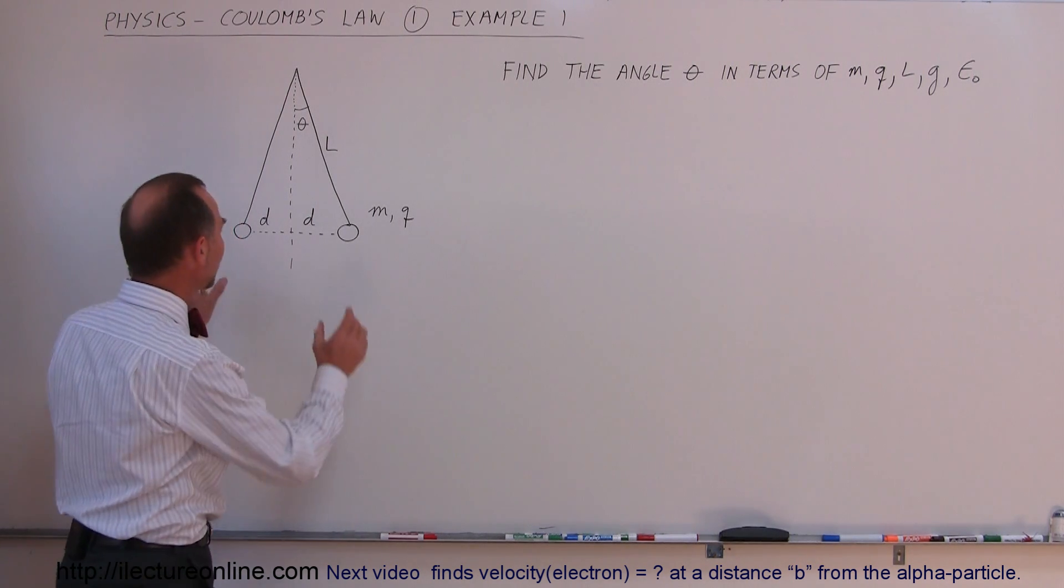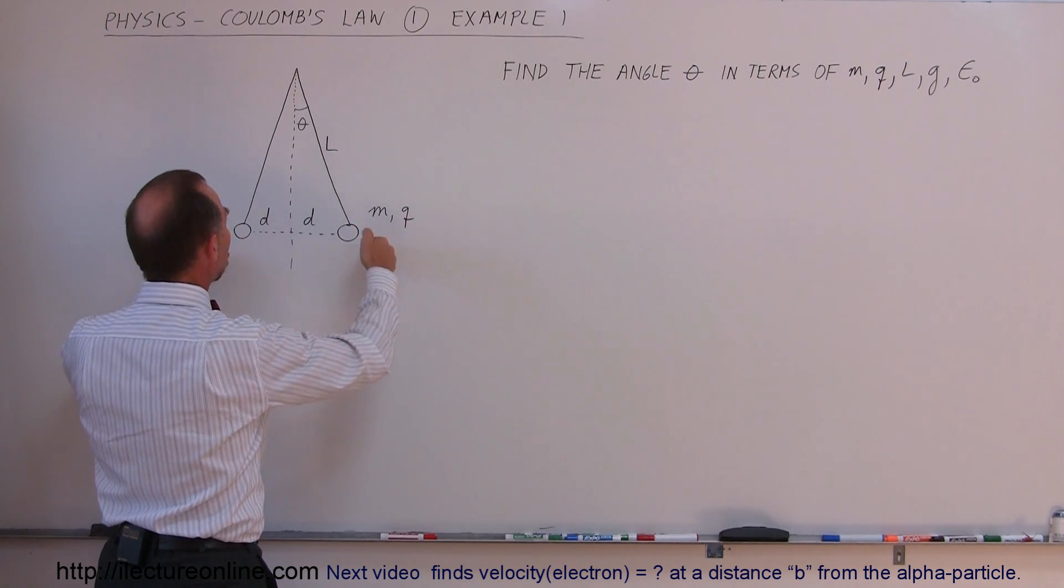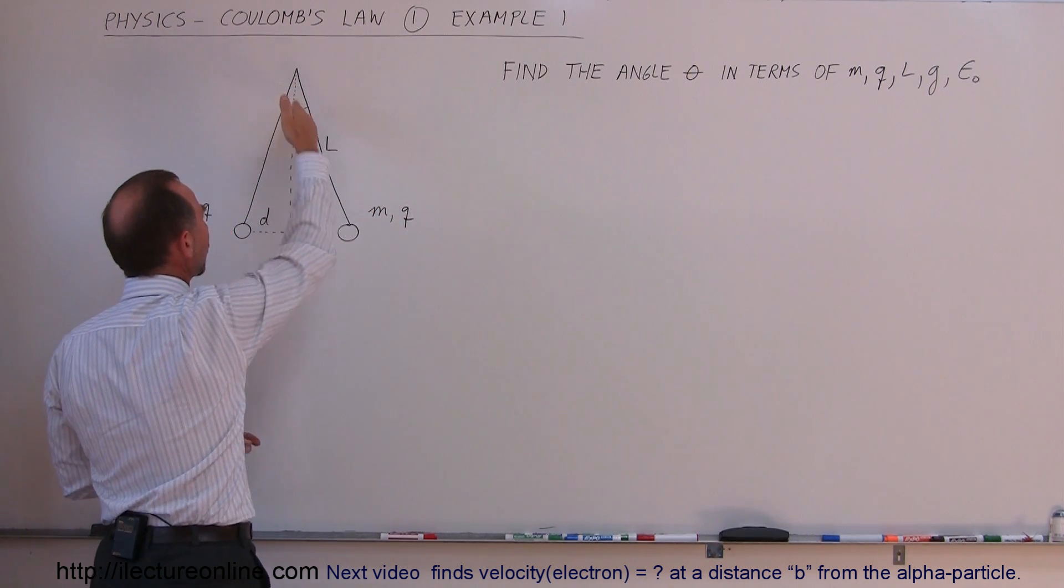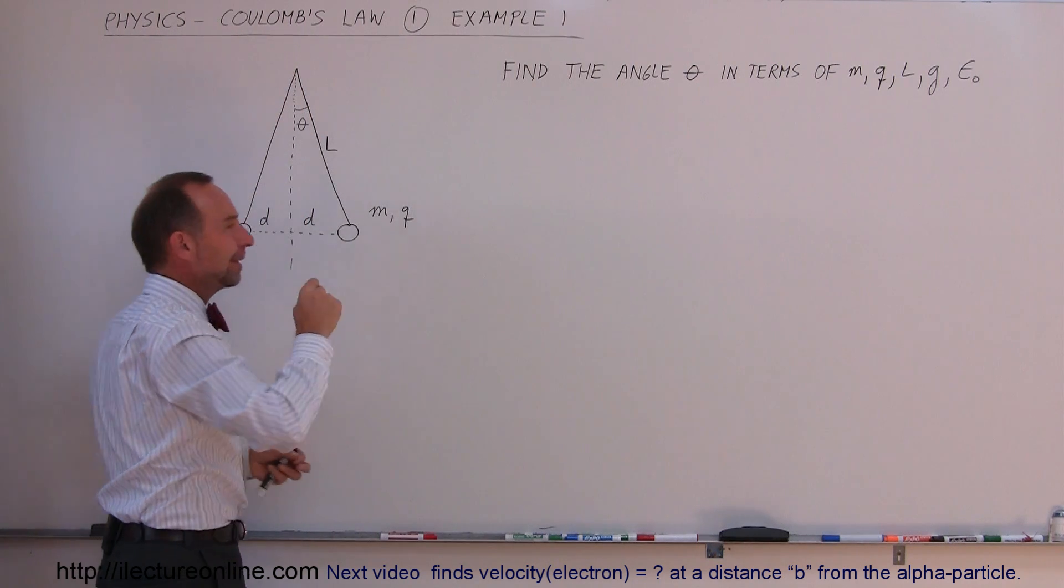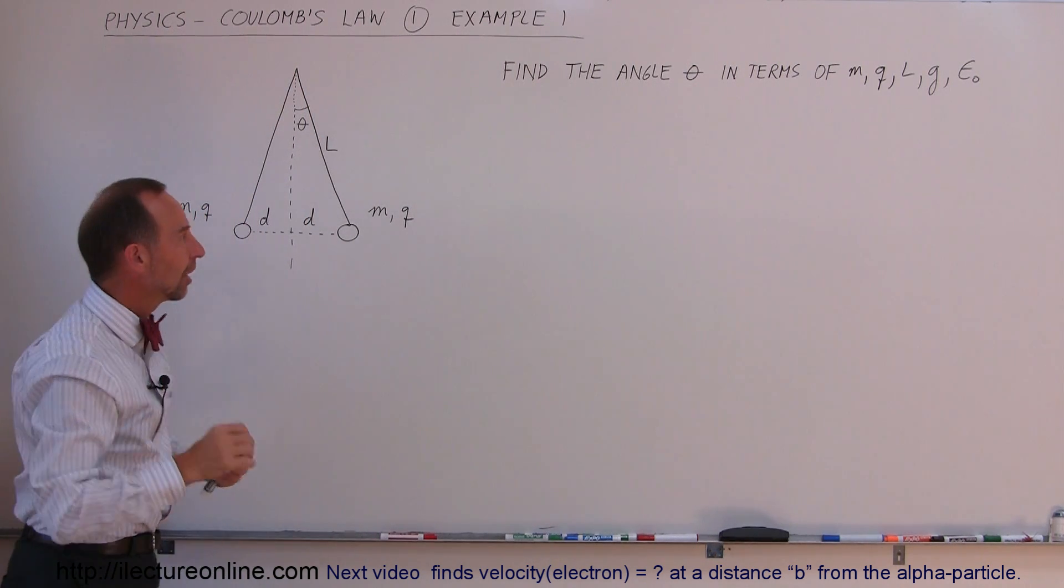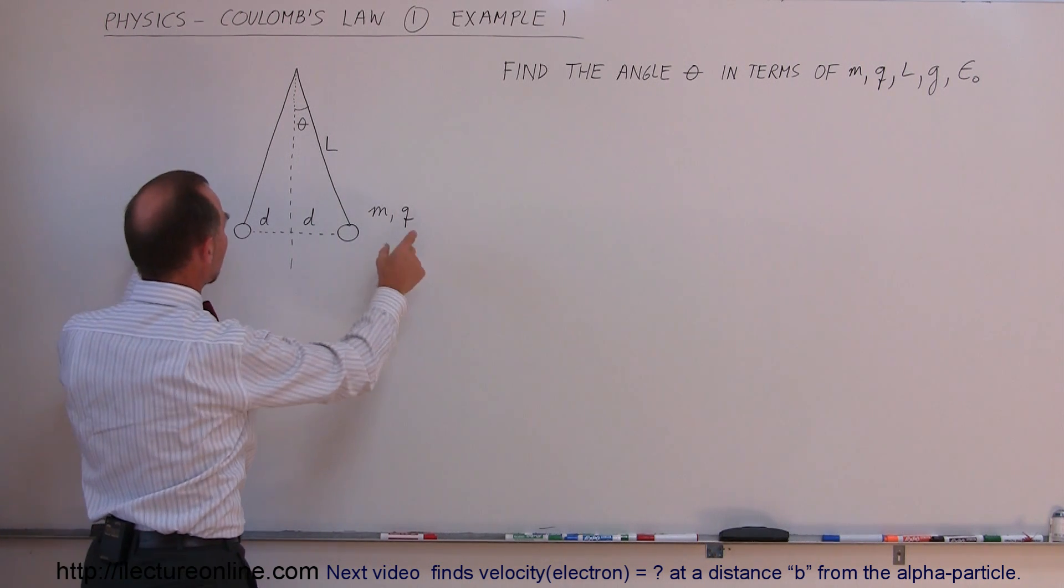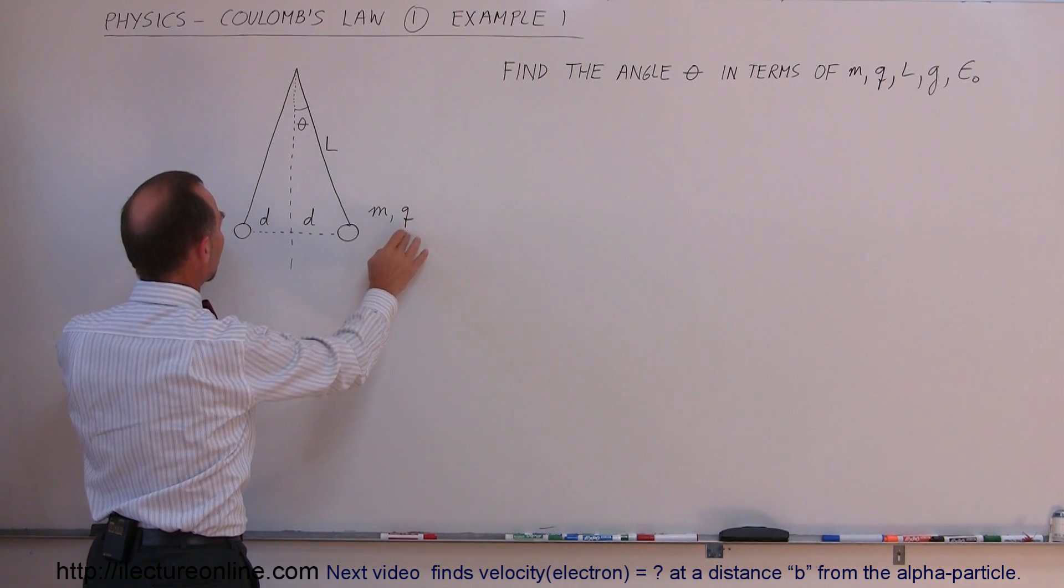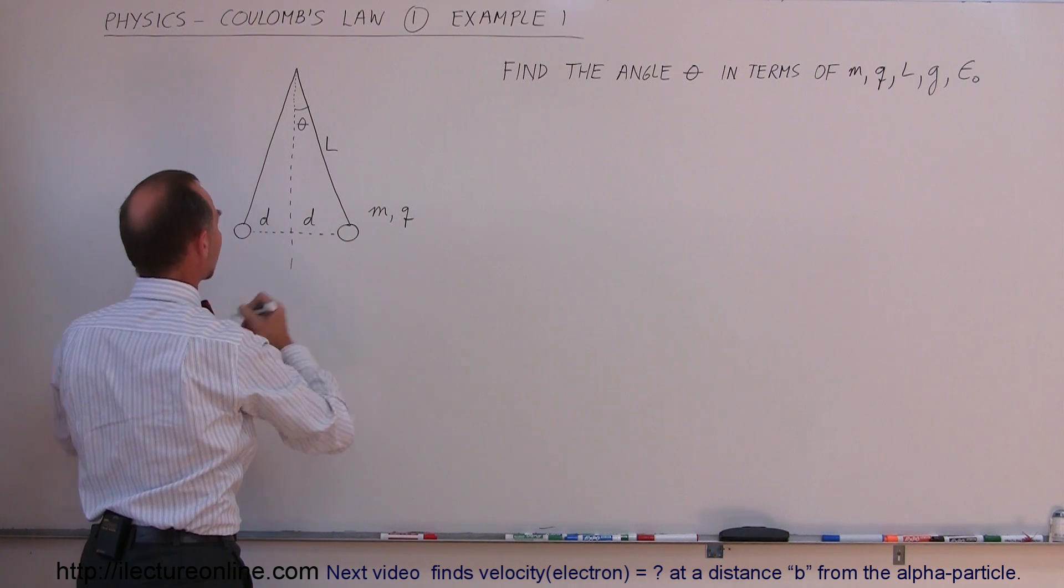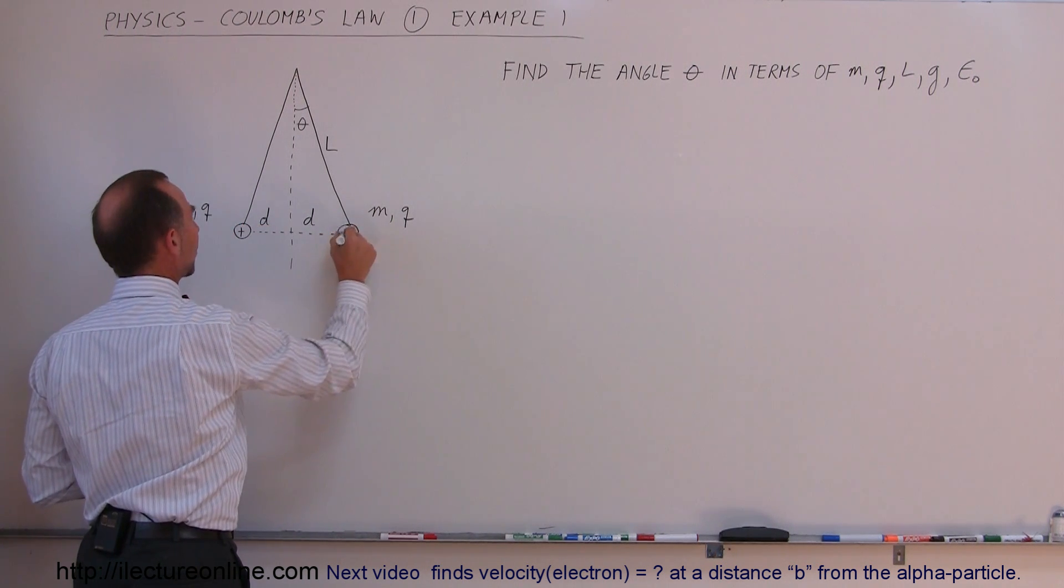Here we have two objects. They have a mass M and charge Q and they're hanging, suspended from long, very thin strings. We can ignore the mass of the strings. Because of the repulsive forces, they are equally charged with positive charge on both masses.